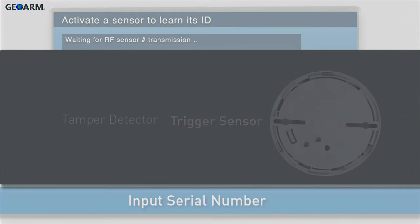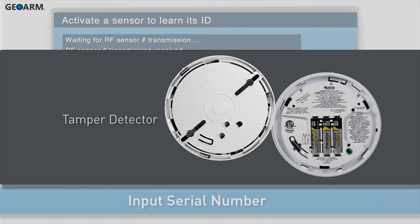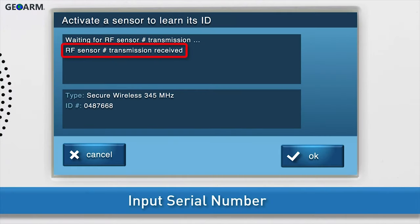You will see a message that the panel is waiting for the sensor transmission. Trigger the sensor by twisting the detector counter-clockwise to remove the mounting base. You will see the confirmation message and ID number on-screen.